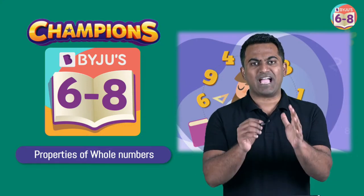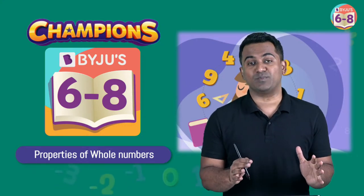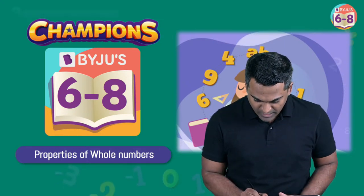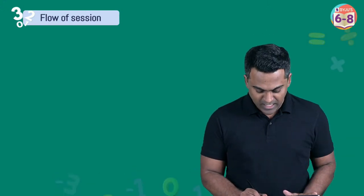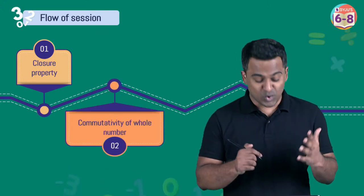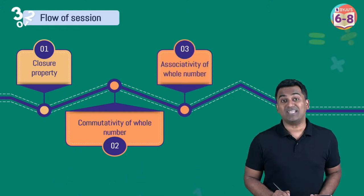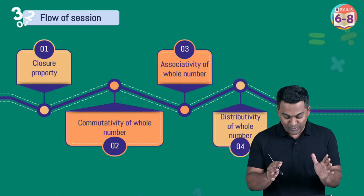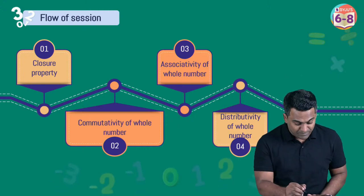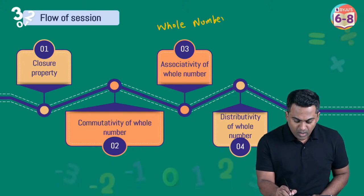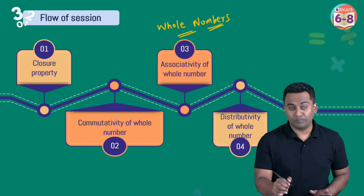Let's first have a look at what properties we'll be covering today — all related to whole numbers. We're going to start off with closure property, then move on to commutativity of whole numbers, then associativity, and finally wrap the session up by looking at distributivity property of whole numbers.